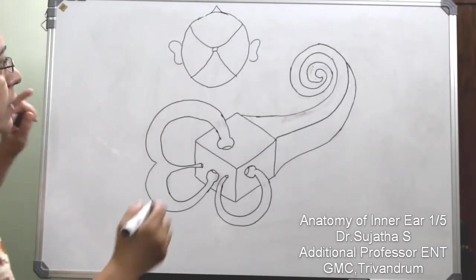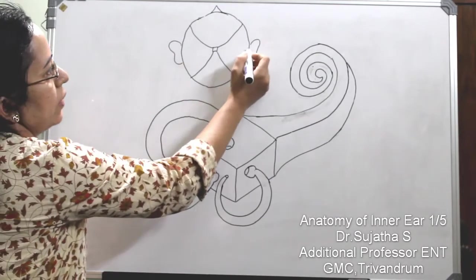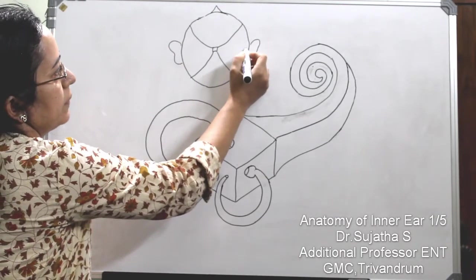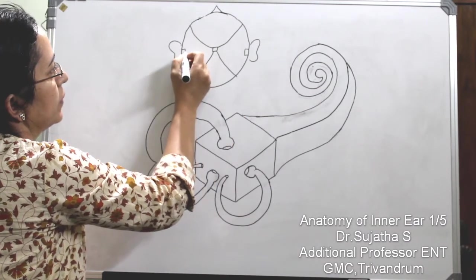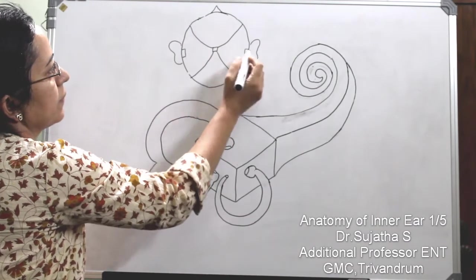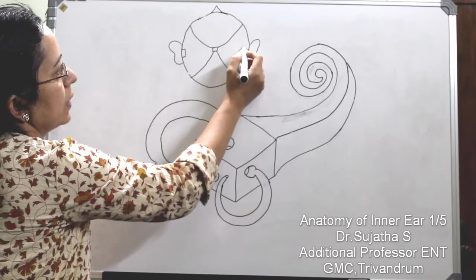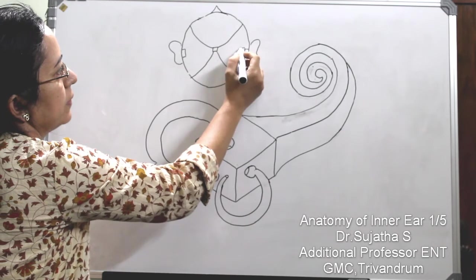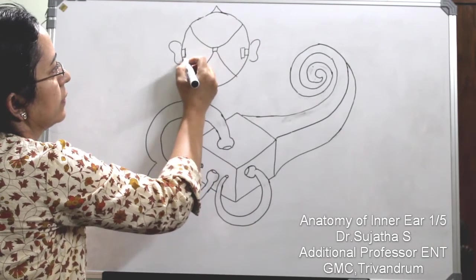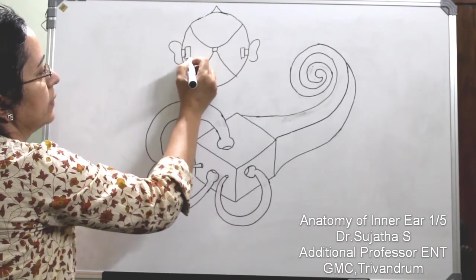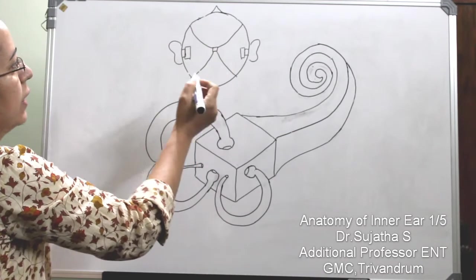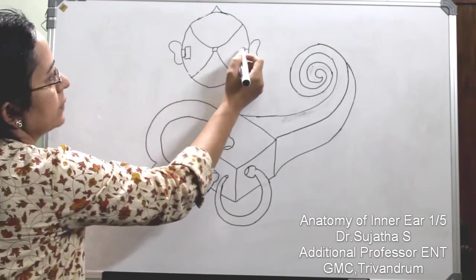The external auditory canal comes here on both sides. Then comes your middle ear, and your inner ear.